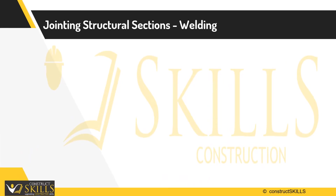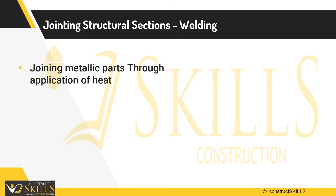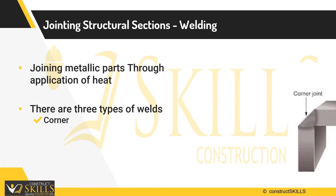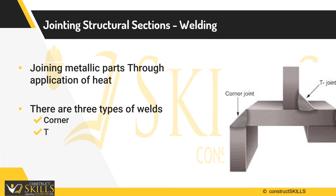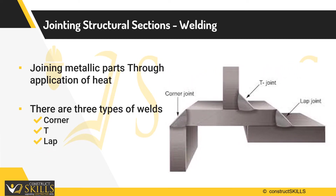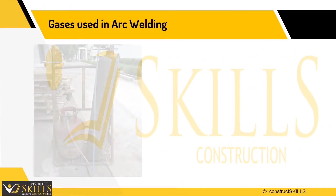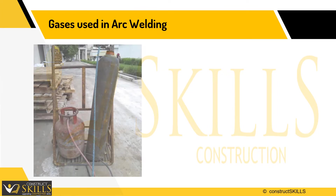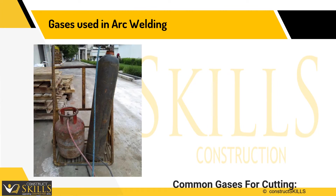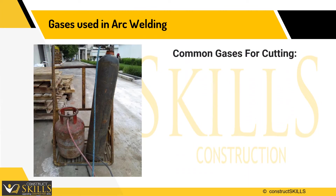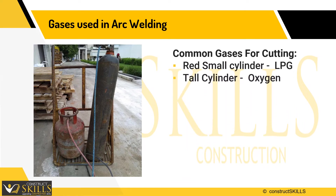Joining structural sections by welding is done by heating the members. There are three types of weld: corner weld, T-weld, and lap weld. In arc welding, gas is used. As shown in the picture, the red small cylinder is LPG and the tall cylinder is oxygen.